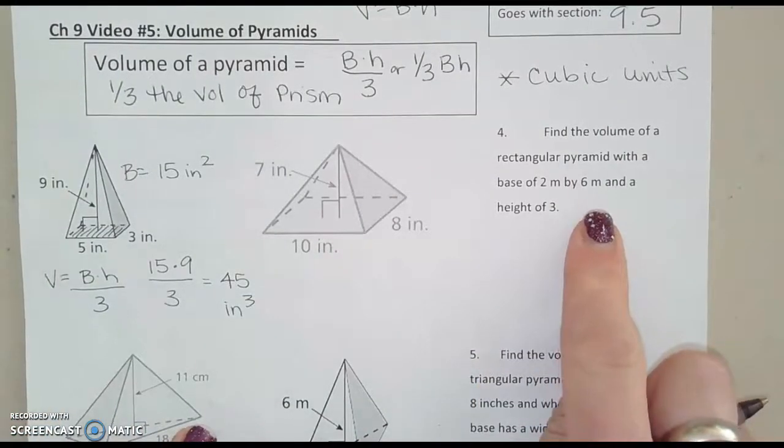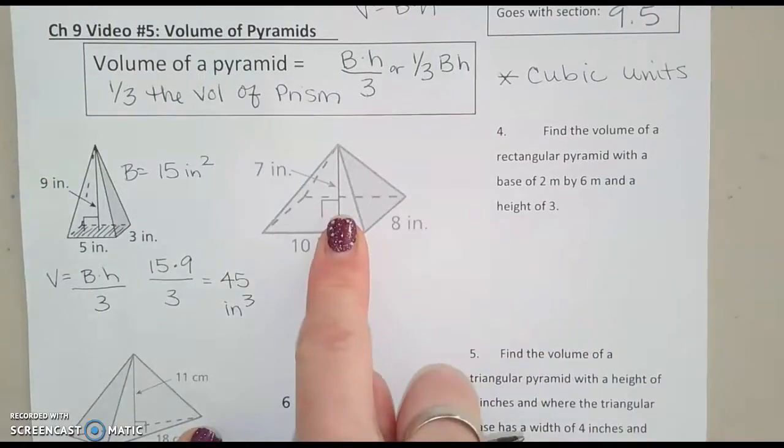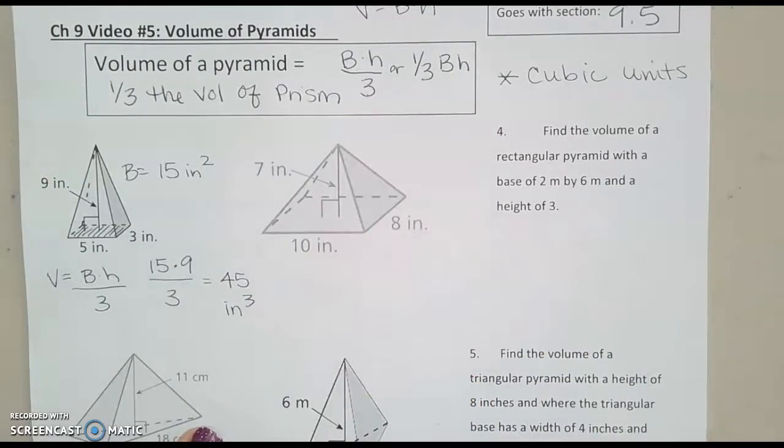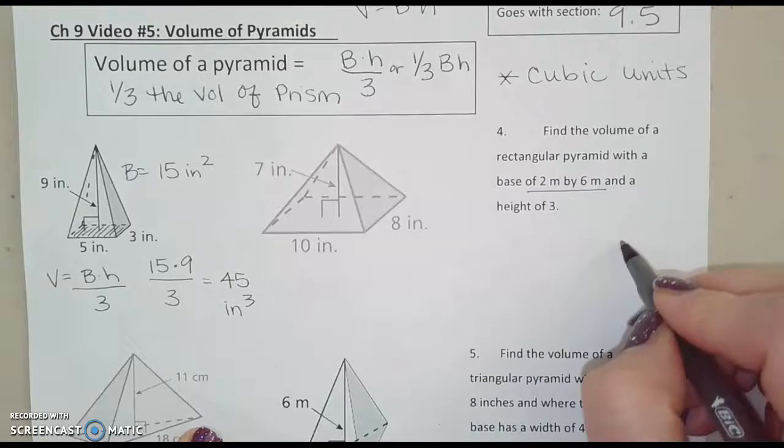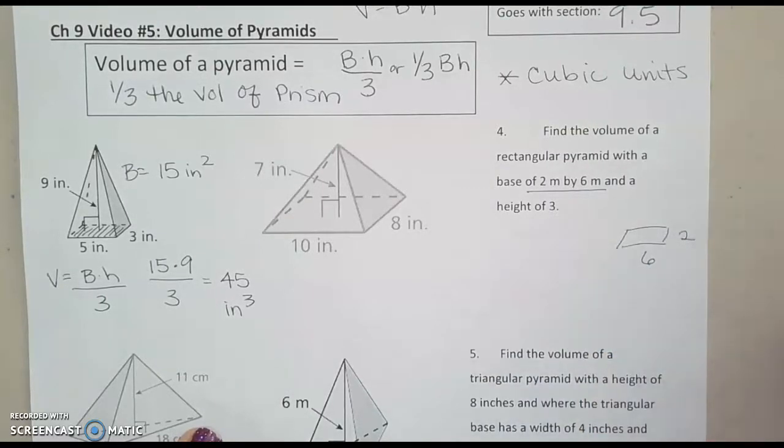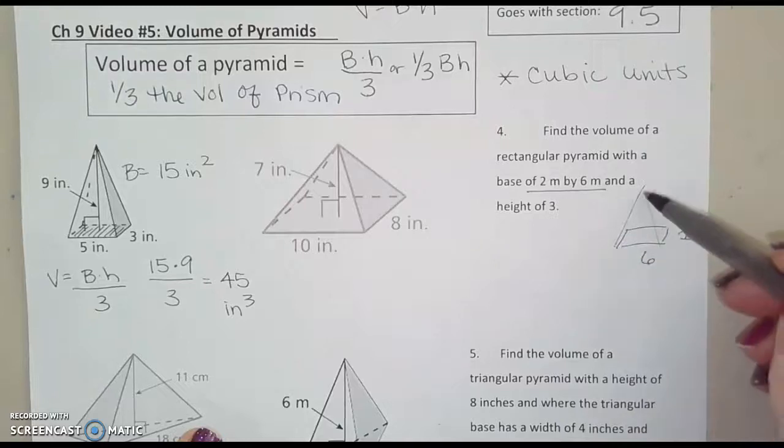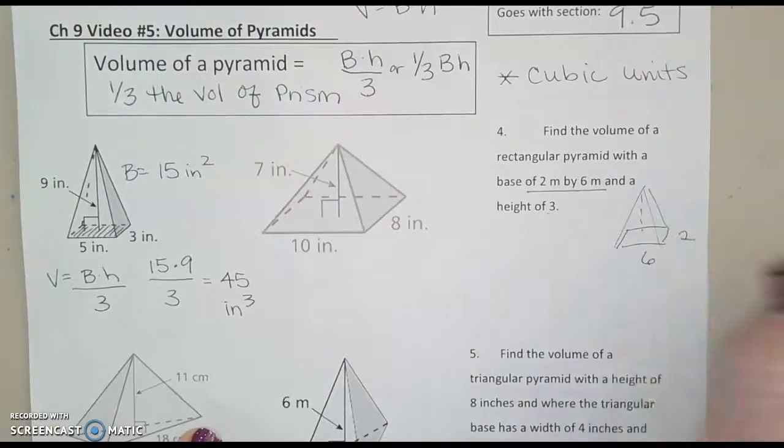Alright, I want to come over here and do this word problem, and then I'll let you do this one as practice. So it says, find the volume of a rectangular pyramid with a base of 2 meters by 6 meters. So my rectangular pyramid is 2 by 6, and then it comes up to a point, and it has a height of 3. So my dotted line in here would be 3.